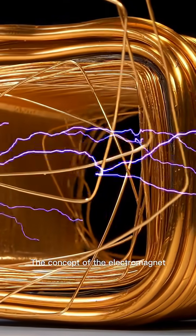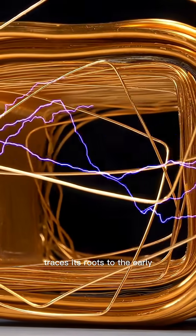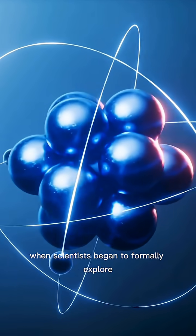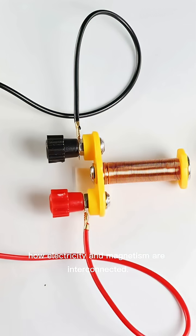The concept of the electromagnet traces its roots to the early 19th century, when scientists began to formally explore how electricity and magnetism are interconnected.